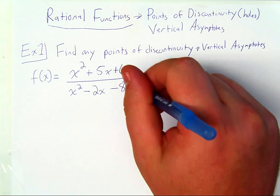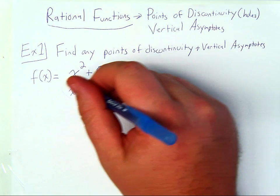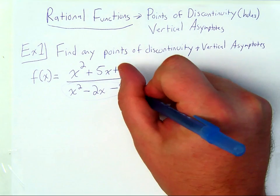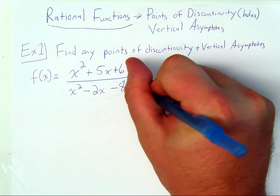Because we have variables in the denominator, we have to worry about division by zero. So what we want to do is figure out what would make the denominator equal zero.